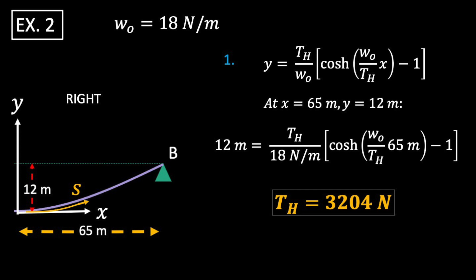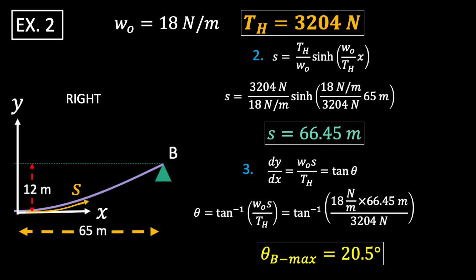Then through trial and error, we solve for a constant horizontal tension of 3,204 newtons. Next, we find the cable length from the origin to point B.